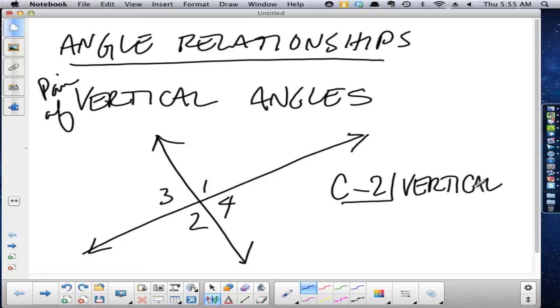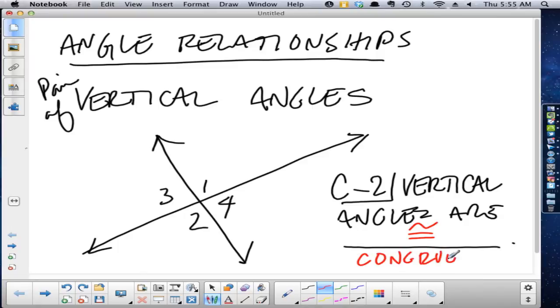Conjecture two: vertical angles are... and normally I'd stop here and ask you to pause and you'd fill this out, and hopefully you would write out the word congruent. So vertical angles are in fact congruent.